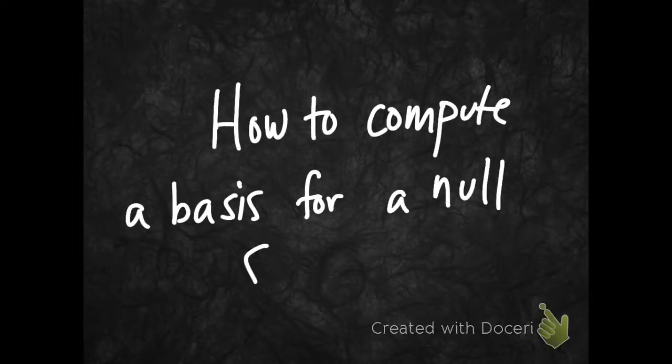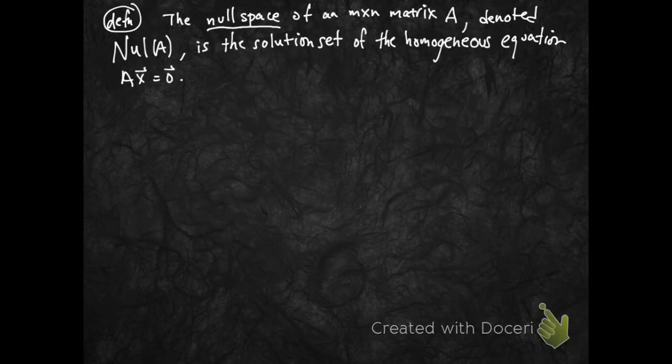How do you compute the basis for a null space? Let's recall the null space of an m by n matrix A. We're going to notate that as null A. This is the solution set of the homogeneous equation Ax equals 0.